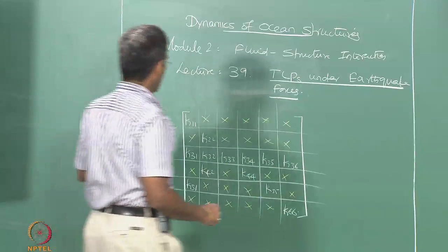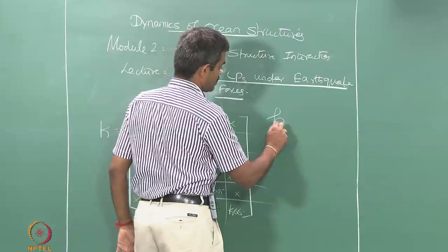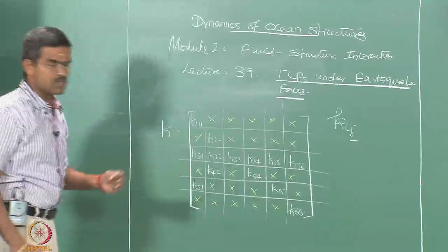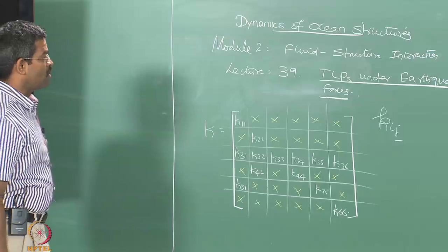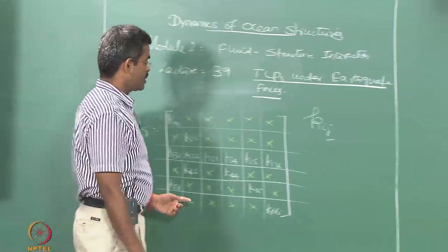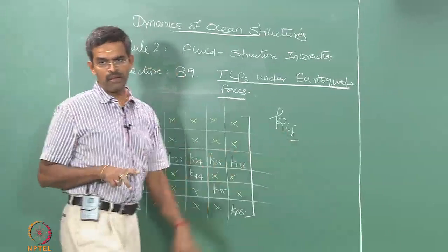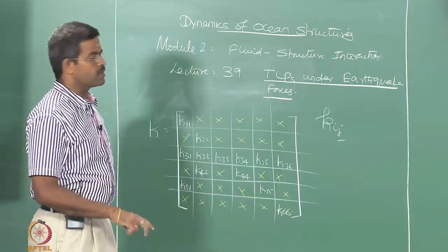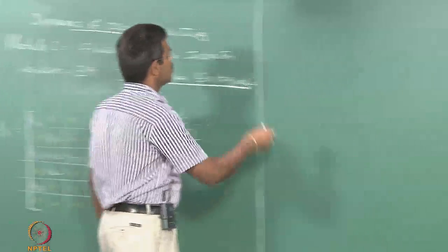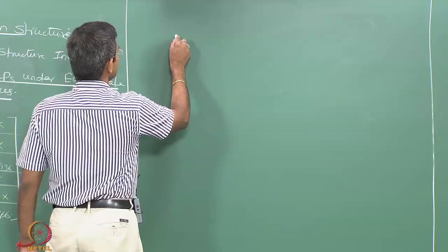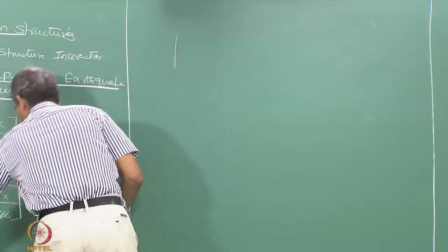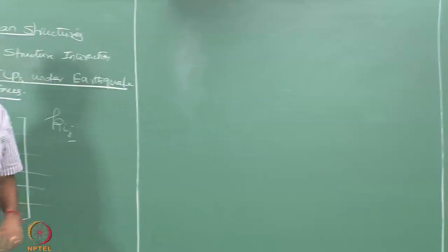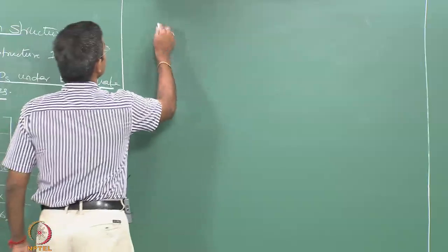To derive the elements of the stiffness matrix, I must give unit displacement at the j-th degree and get the forces in the i-th degree, keeping all other degrees of freedom restrained. In this case, I must give unit rotation about the yaw plane and get the forces influenced by the yaw motion. Let us draw the plan of a 4-column quantum-supported TLP.